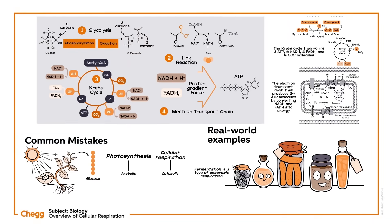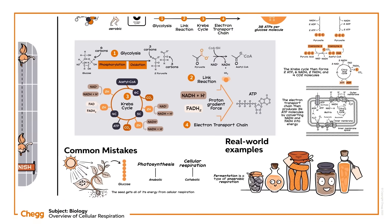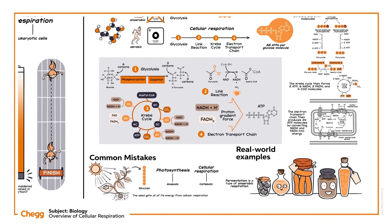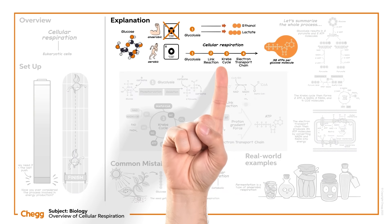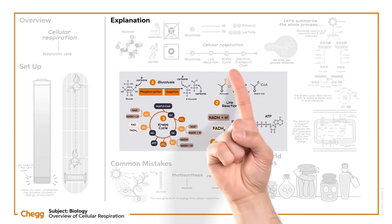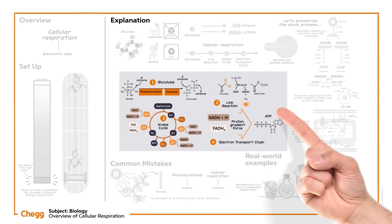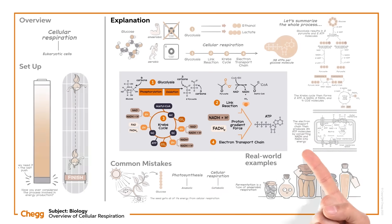In plants, both photosynthesis and cellular respiration happen at the same time. And in fact, before a plant has germinated, the seed gets all of its energy from cellular respiration. Cellular respiration is essential to all life. Now we've learned about the concept of cellular respiration, the pathways involved, and the final product. See you next time!